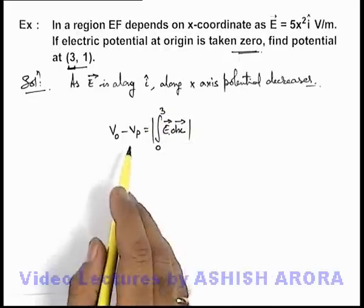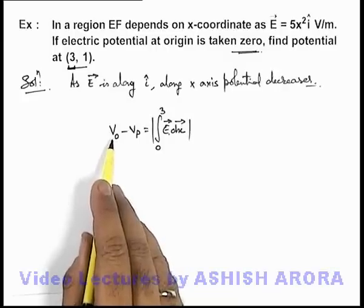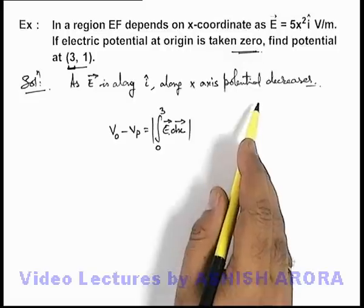In magnitude, because we already taken potential at origin to be the higher one, because along the direction of electric field it decreases.